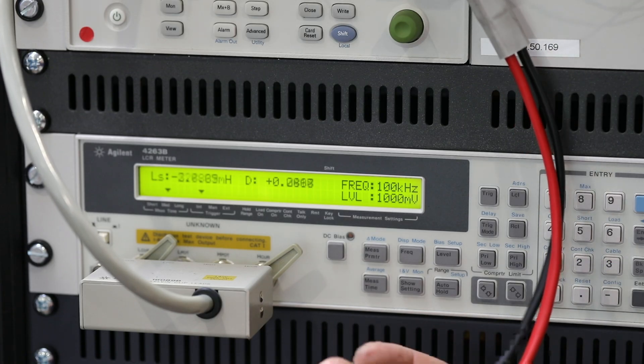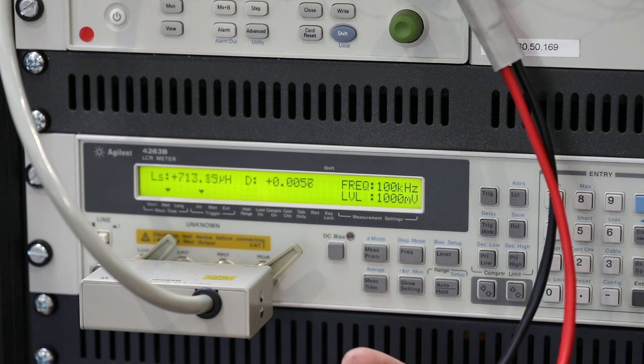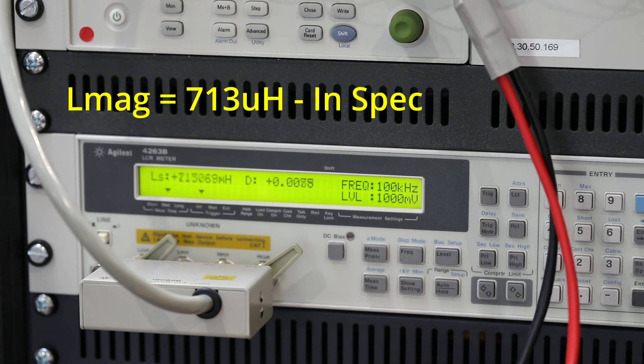And there we go, 713 microhenries is within specification for our primary magnetising inductance.